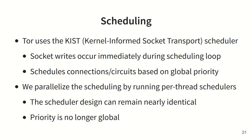Tor's primary connection scheduler is the KISS scheduler, which attempts to minimize the amount of data in the kernel's outgoing socket queues. This scheduler writes to the sockets immediately within the scheduling loop and maintains a global priority list of all connections. In order to parallelize the relay scheduling, we just run multiple schedulers, one on each thread. Connection priority becomes local between connections belonging to the same thread rather than global across all connections, but in practice this shouldn't have much of an impact on the relay's performance, since scheduling fairness doesn't need to be perfect across all connections.